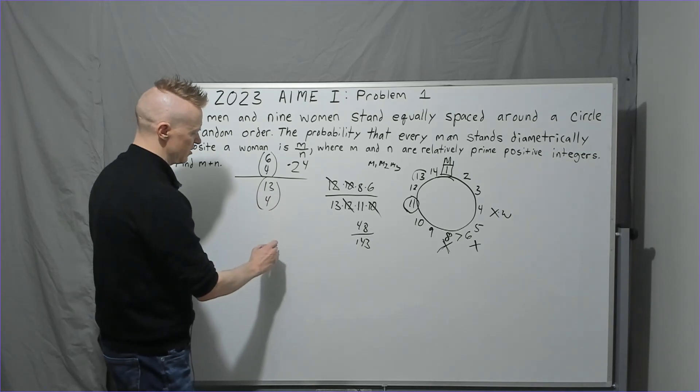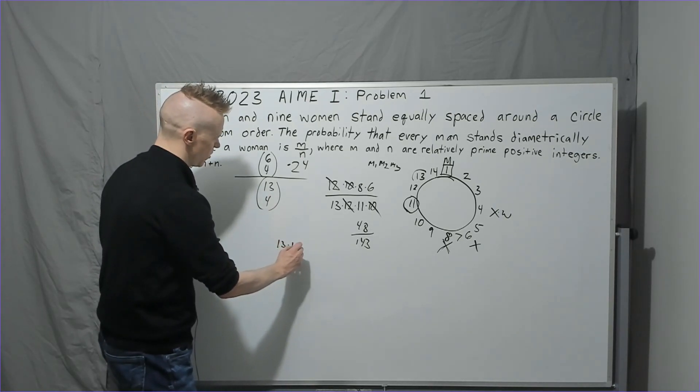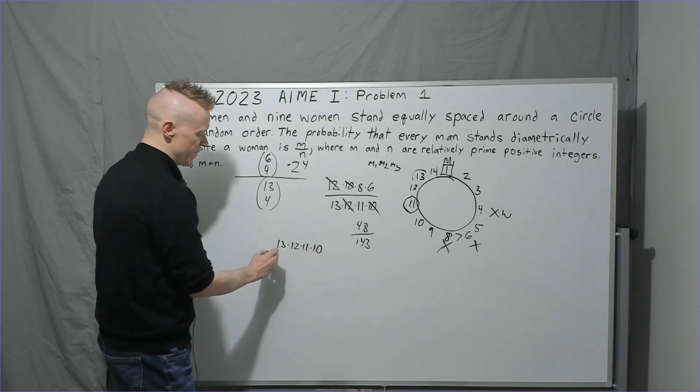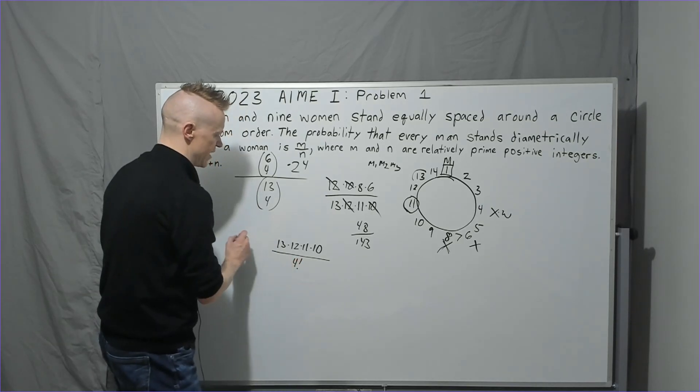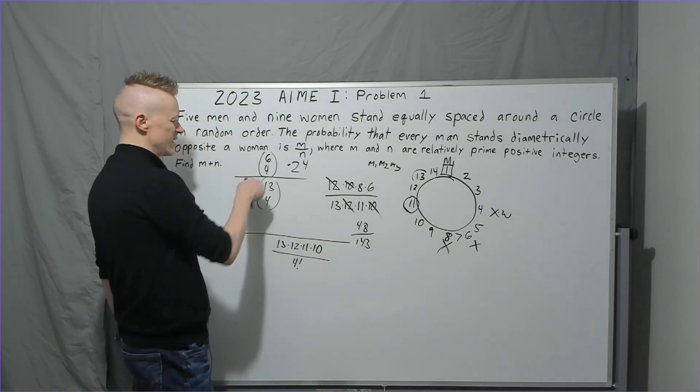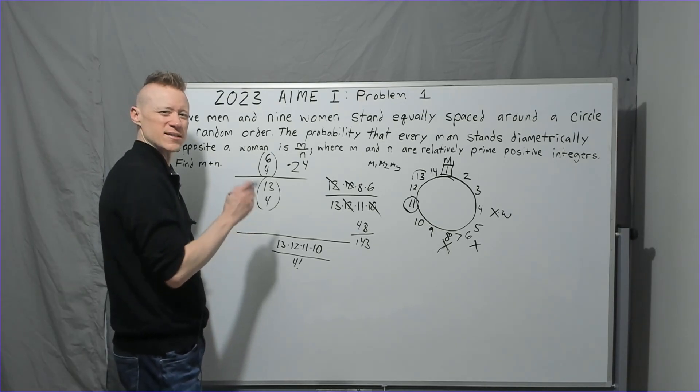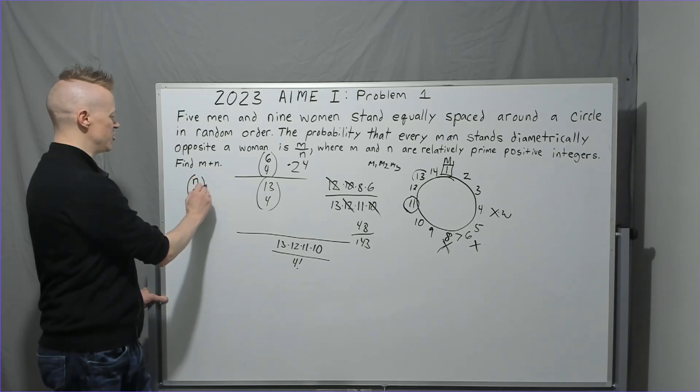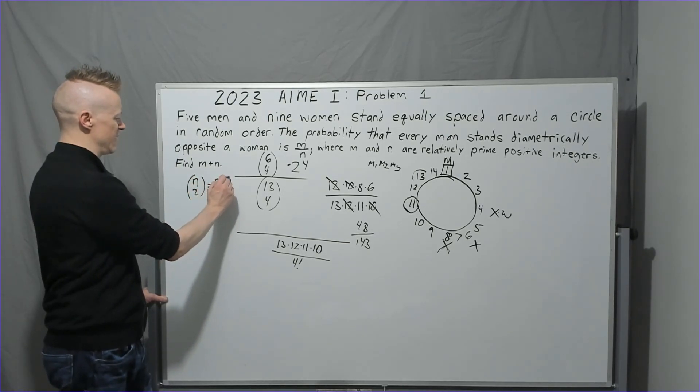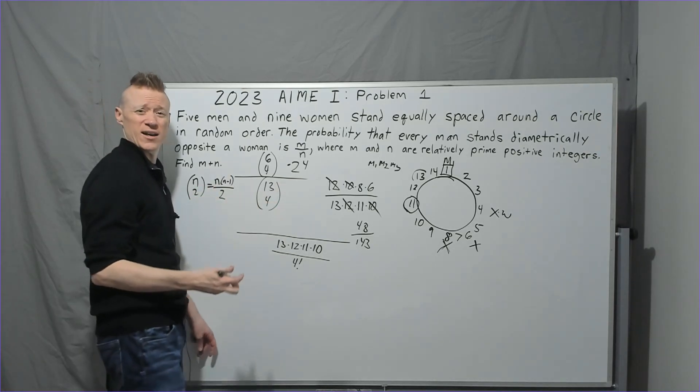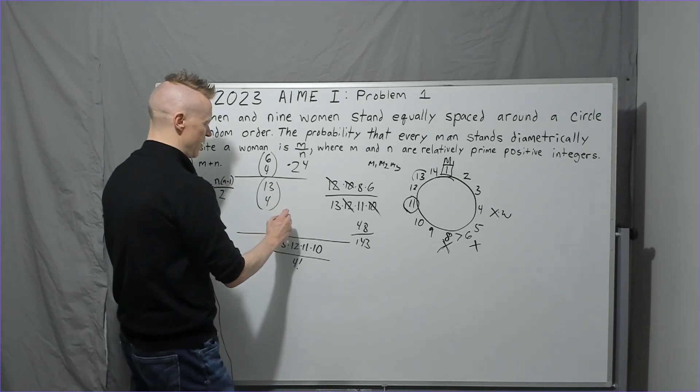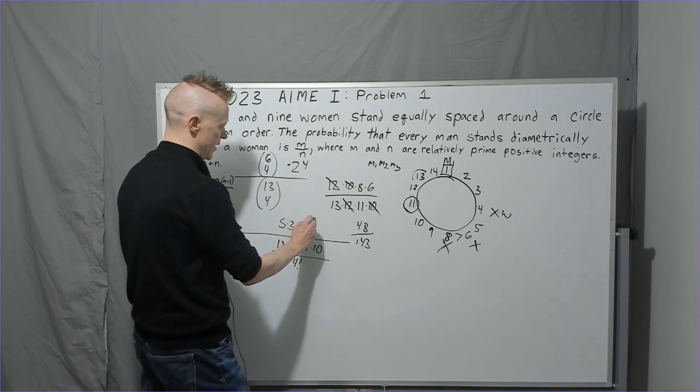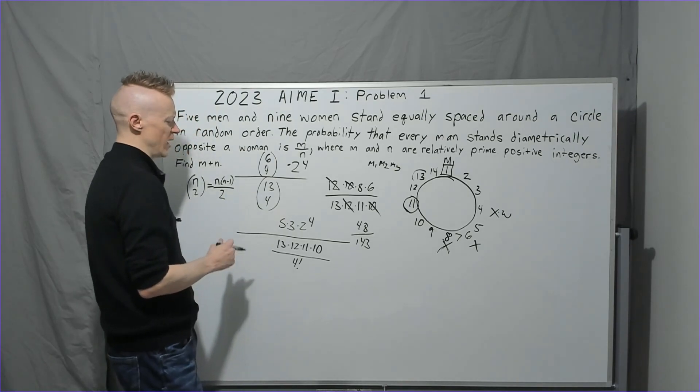Let's calculate this as well and see how it comes out. We already know what 13 choose 4 is. We're going to have 13 times 12 times 11 times 10, the nine factorials canceling, and I'm just going to keep it as 4 factorial for now. The numerator, 6 choose 4 is just like 6 choose 2. It's 6 times 5 over 2. Again, I'm using a shortcut: n choose 2 is n times n minus 1 over 2. So 6 times 5 over 2 would be 15, and you're going to have 5 times 3 times 2 to the fourth.